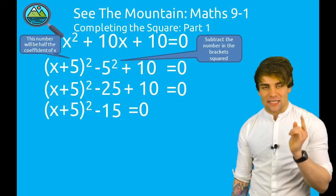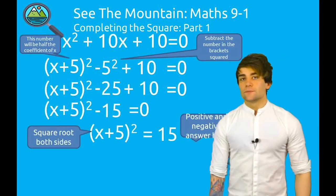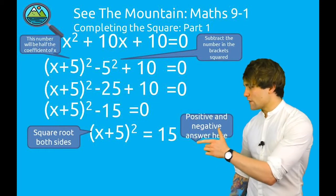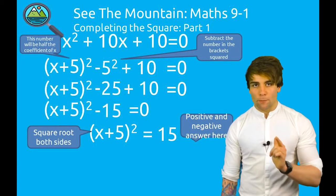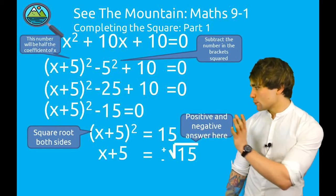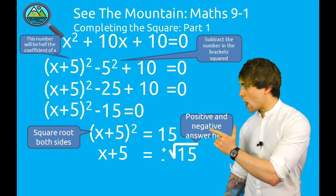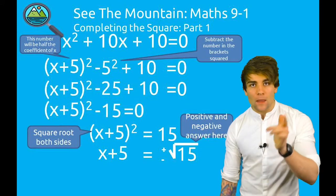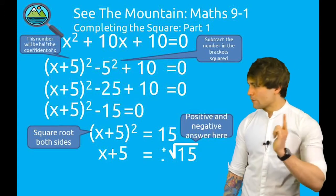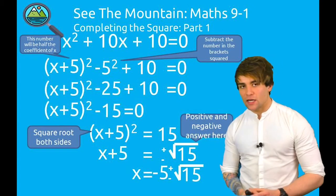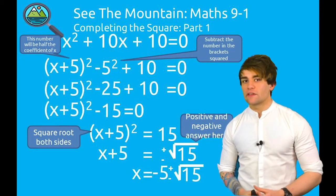Now it gets nice and simple. Let's add 15 to both sides. So we have (x + 5)² = 15. Next step, square root both sides. So we've got x + 5 = ±√15, but we're not done yet. We're just going to take away that 5 from the left side. So taking 5 from both sides gives us a final answer. So x = -5 ± √15.